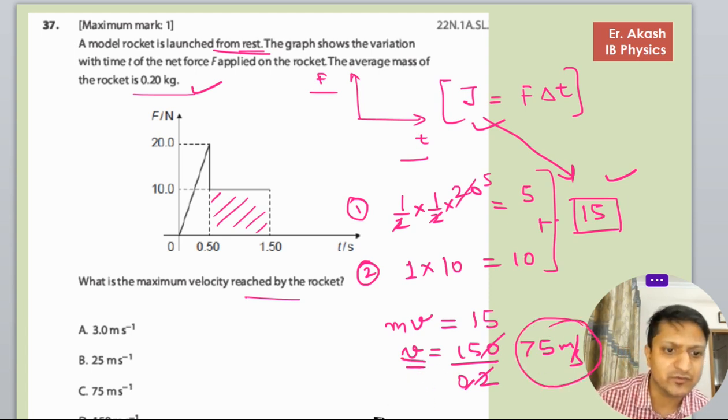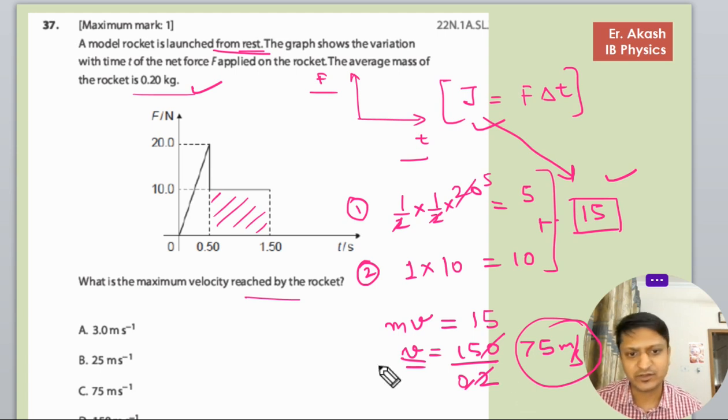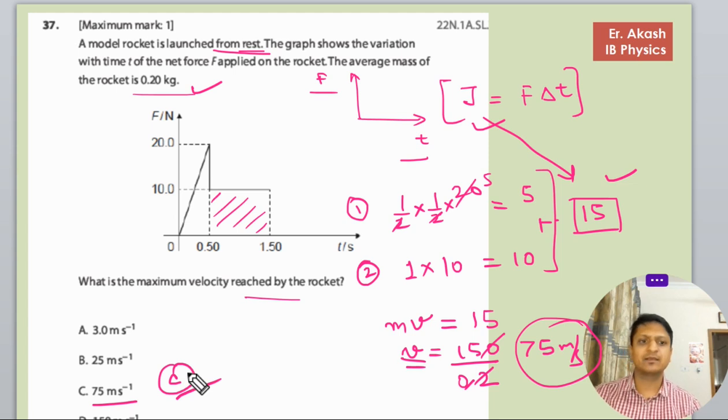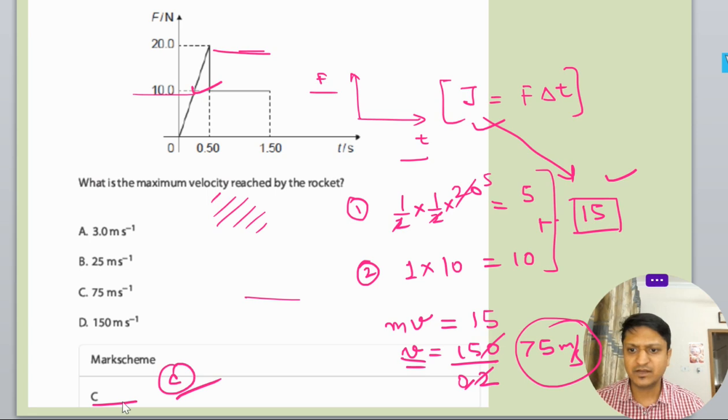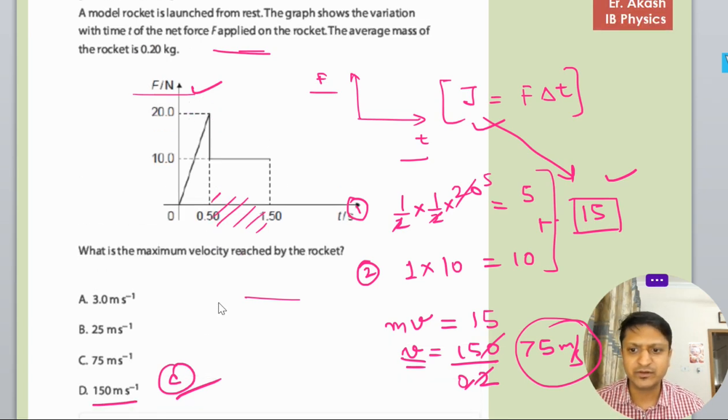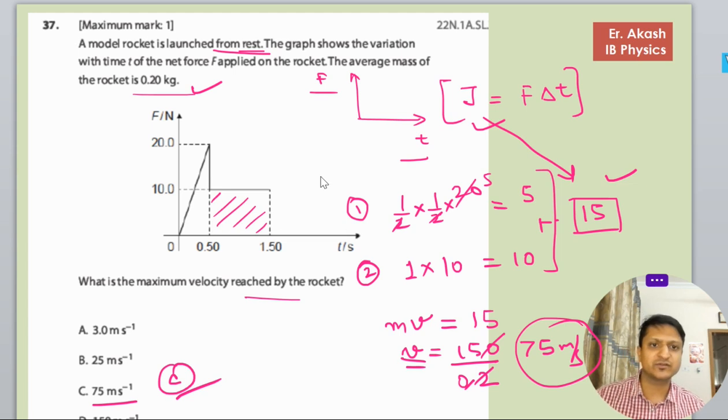This is the velocity. So units will be of velocity. So option C is the right option. Option C is the right option. You can see how we have solved this question.